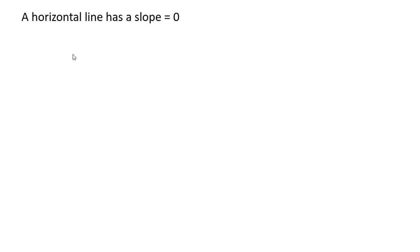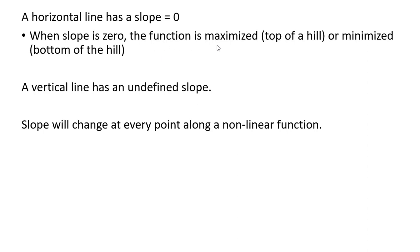A horizontal line has a slope of zero. When slope is zero, the function is maximized or minimized. For example, a revenue function will be maximized when the slope of the revenue function is zero, and an average cost function will be minimized at the bottom of the average cost curve when the slope is zero. A vertical line has an undefined slope, and slope will change at every point along a nonlinear function.